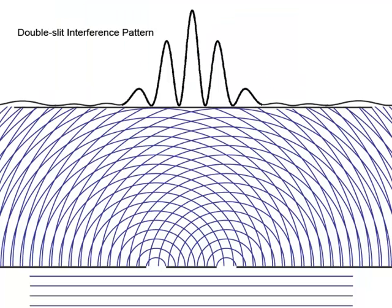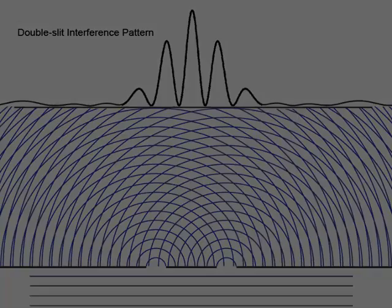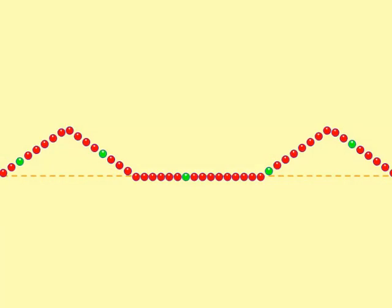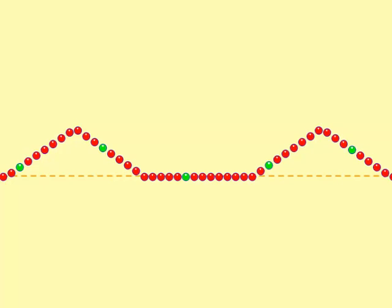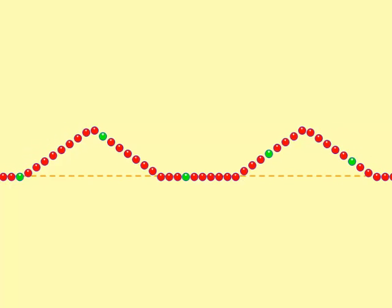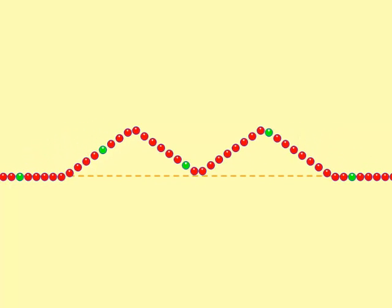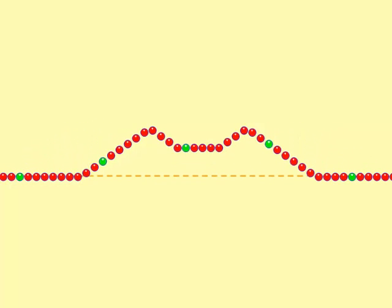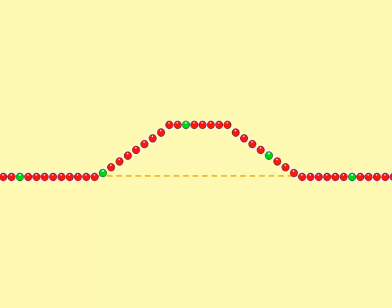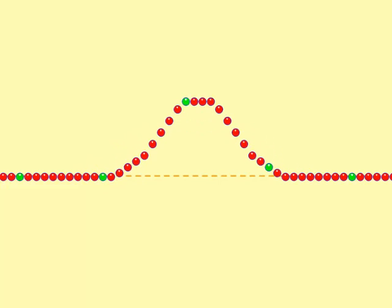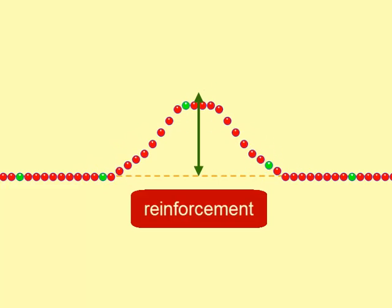An interference pattern is a regular arrangement of places where wave effects are increased, decreased, or neutralized. Constructive interference is when the crest of one wave overlaps the crest of another and their individual effects add together. The result is a wave of larger amplitude called reinforcement.